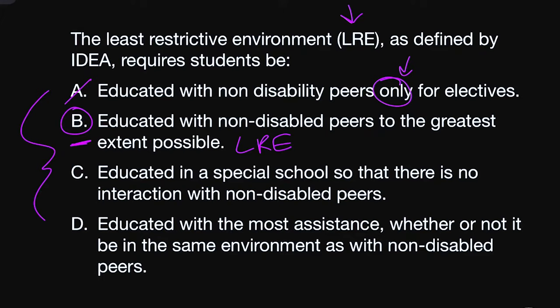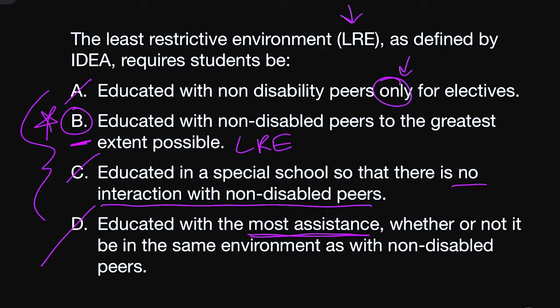I really like B — I'm going to keep it because it's talking about LRE, and I can already see the term LRE in the question stem, but I'm working backwards. Answer C: educated in a special school so there is no interaction with non-disabled peers. This is straight-up 1930s thinking — taking kids with special needs and putting them in a school where nobody heard from them. C is not the correct answer. Answer D: educated with the most assistance, whether or not in the same environment as non-disabled peers. 'The most assistance' just depends — some students need a lot, some don't. It's not one size fits all. So I'm crossing out D. B is the best answer choice here.